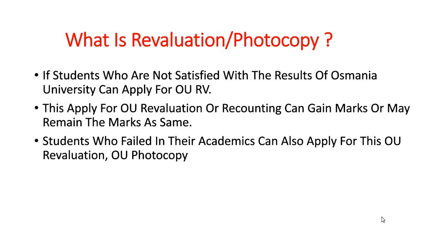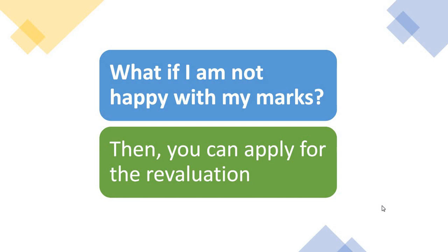Students who failed in their academics can also apply for OU revaluation or photocopy, because some students fail by just two or three marks. The minimum marks to pass in OU is 40 percent, that is 40 marks. So if you got 38 and failed by two marks, and you apply for revaluation or recounting, you might get those two marks and pass. If you are not happy with your marks, revaluation may also give you a chance to increase them.